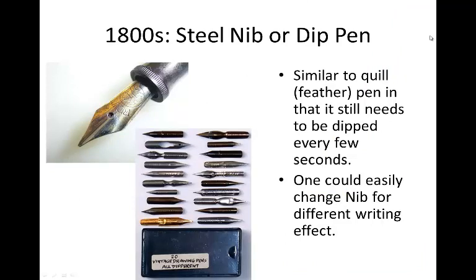In the 1800s, someone came up with an even better idea: the nib or dip pen. Instead of using the tip of a feather, they manufactured steel tips that could attach to a fountain pen and be dipped into ink. The nice thing about the nibs was that they could write in many different styles — thick lines, thinner lines, and things like that.